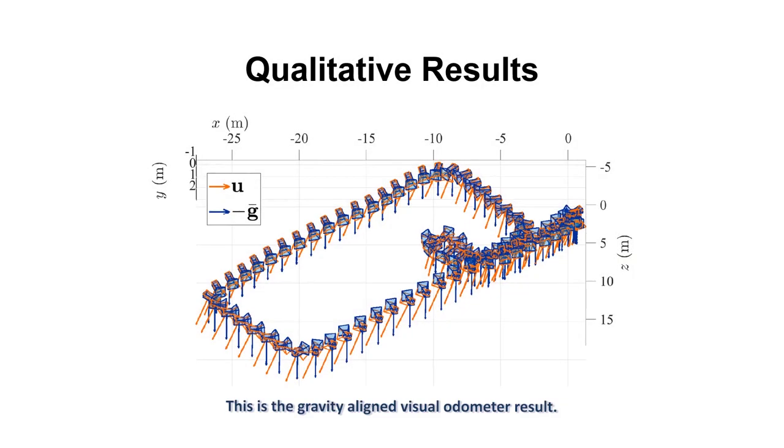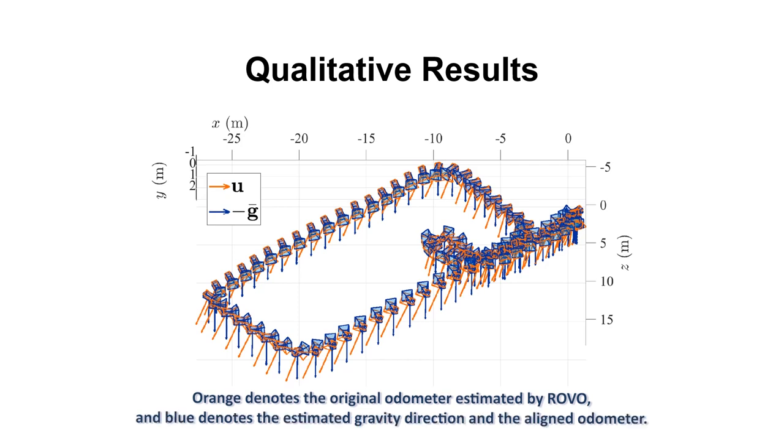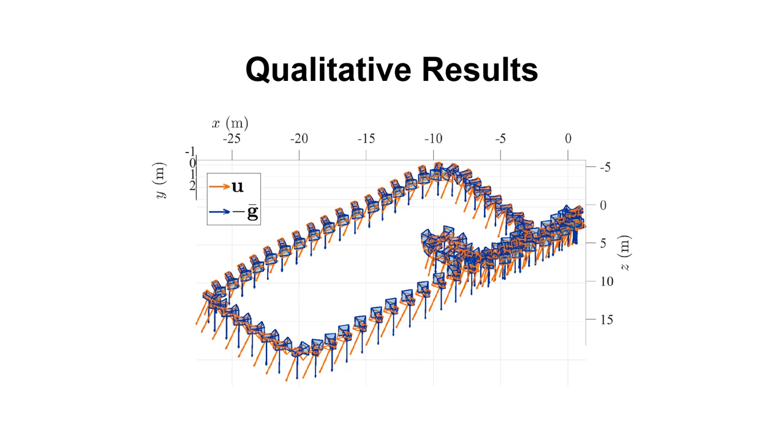This is the gravity aligned visual odometry result. Orange denotes the original odometry estimated by ROVO, and blue denotes the estimated gravity direction and the aligned odometry. The rig poses estimated by ROVO are well aligned according to the gravity direction.